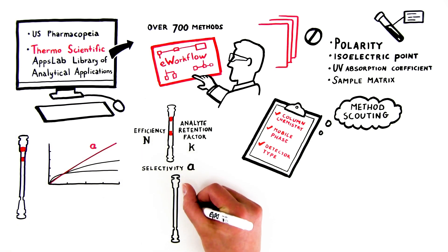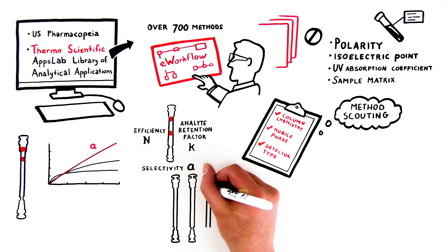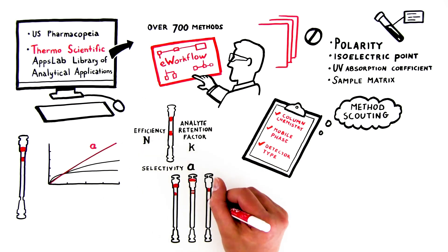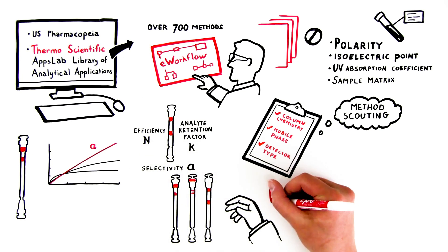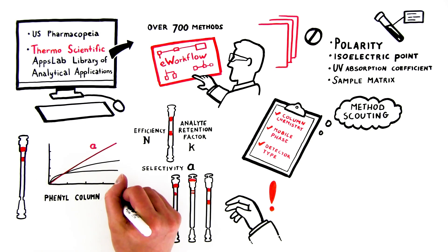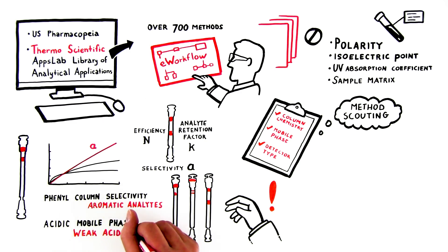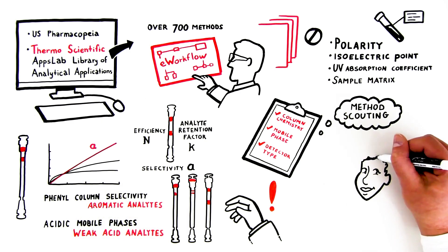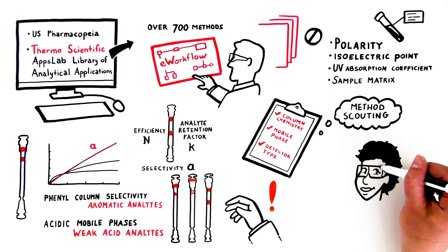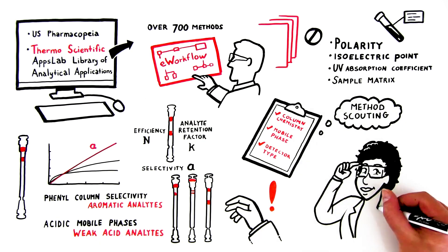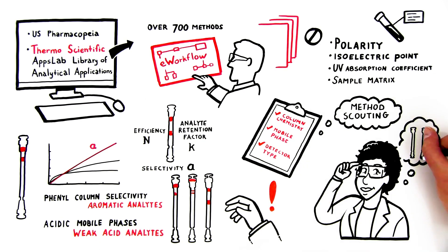By scouting various column and mobile phase combinations, you can identify a promising starting point for your method. Examples include phenyl column selectivity for aromatic analytes and acidic mobile phases for weak acid analytes. Prior knowledge of analyte and sample properties can help narrow the number of columns and mobile phases down to a few promising candidates.